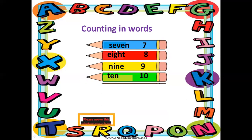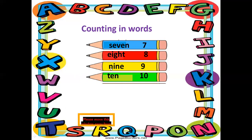It's a little bit difficult but you can do it. After seven, our next number is eight - E-I-G-H-T. After eight our next number is nine - N-I-N-E. And our last number of today's lecture is ten - T-E-N. It's easy!